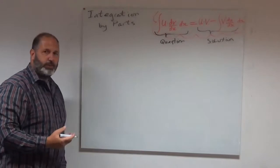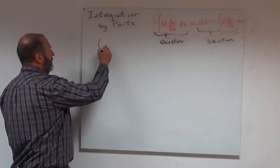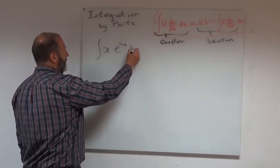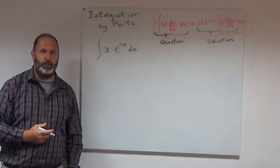So we're going to jump into a real example and see if we can work through it. So let's try x e to the 3x. So our function is x e to the 3x and we want to integrate that with respect to x.